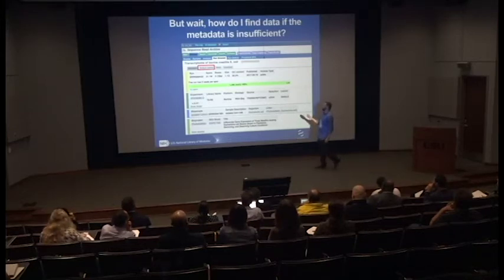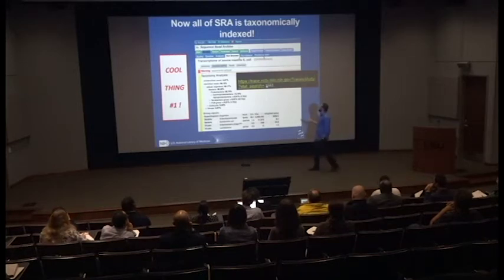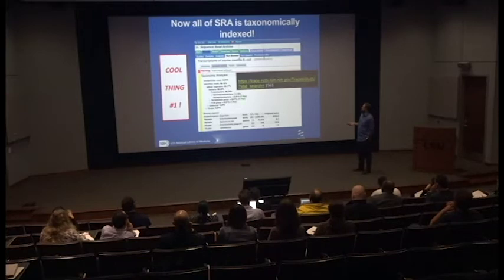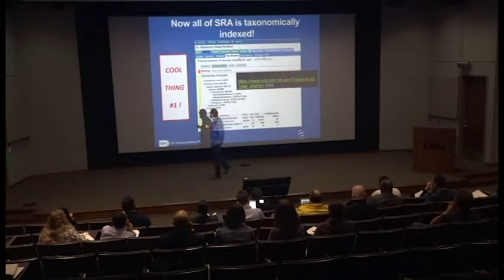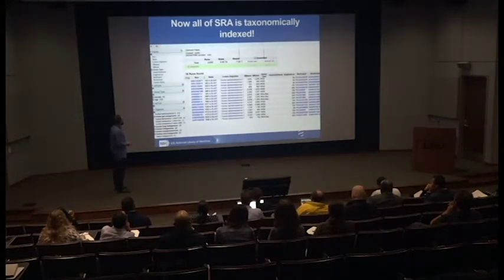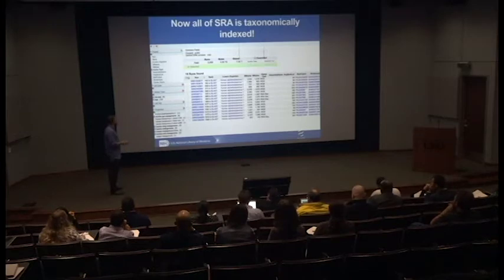One thing we've done that's probably relevant to a lot of you is we've taxonomically indexed the entire SRA. By using this URL — you can grab it from the presentation — you can search the whole SRA for taxonomy analysis, and for every run you can get taxonomy analysis. Here I see this is pretty much all E. coli, and not shockingly, I have some phages in there as well.